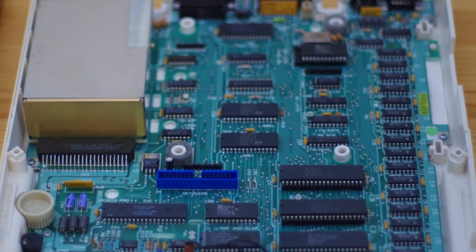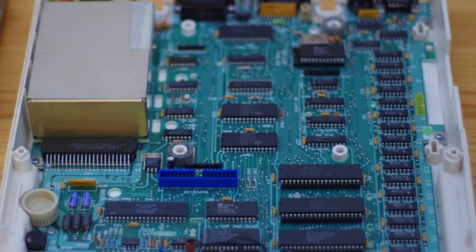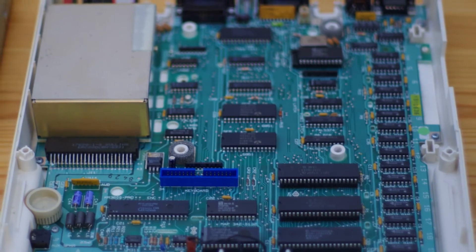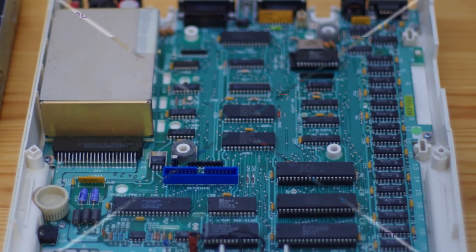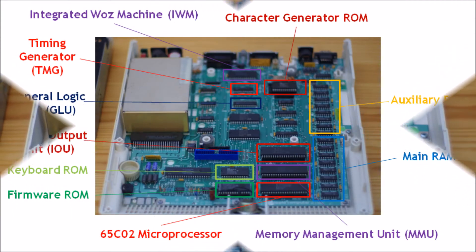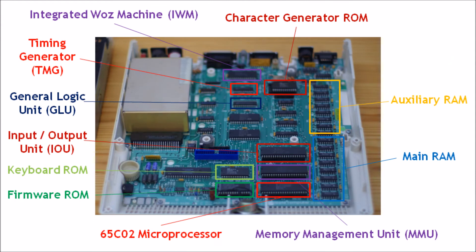Here's what the main logic board of the Apple IIc looks like. Before we look at the individual components, we'll start by looking at this diagram showing the locations of the most important integrated circuits in the Apple IIc.